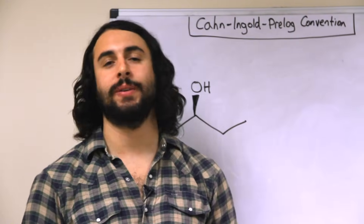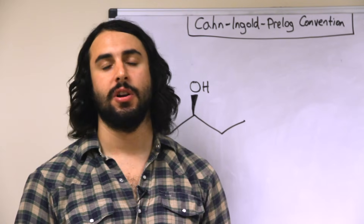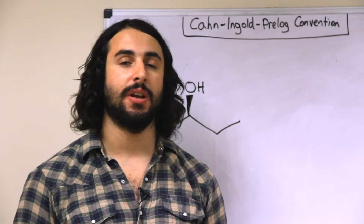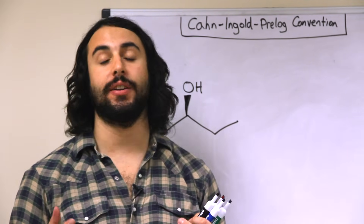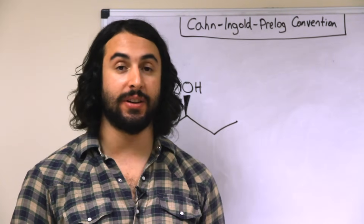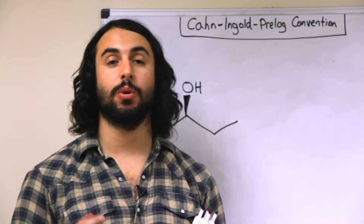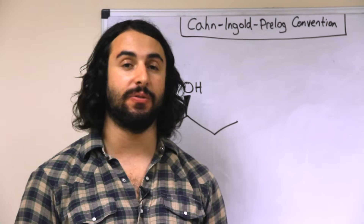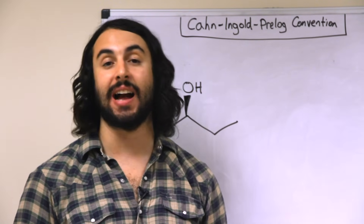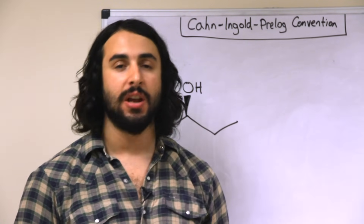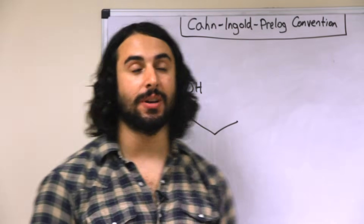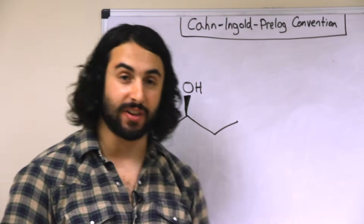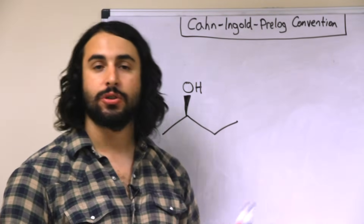For a molecule with one chiral center there are two different enantiomeric possibilities, and we want a way to differentiate between them — in other words, we want a way to assign absolute configuration to any chiral center. In order to do that we're going to use something called the Cahn-Ingold-Prelog convention.